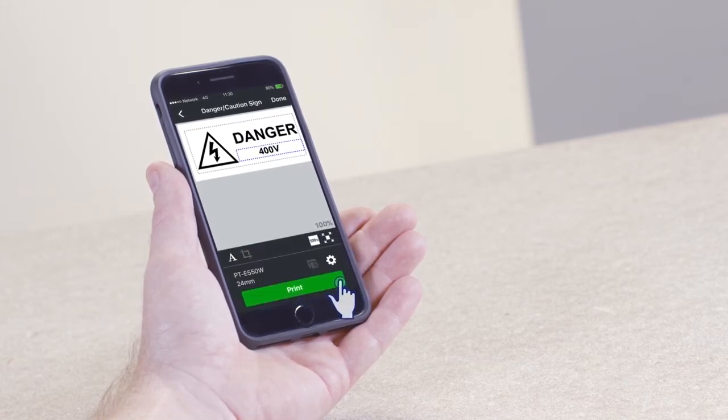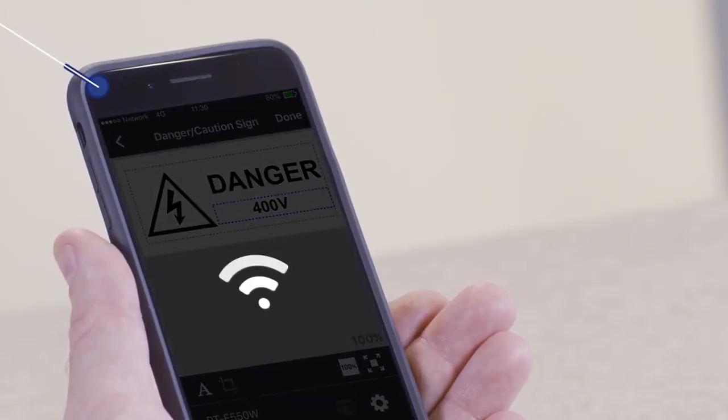When you've finished editing the label, tap Print. The label will now be sent wirelessly to the printer.